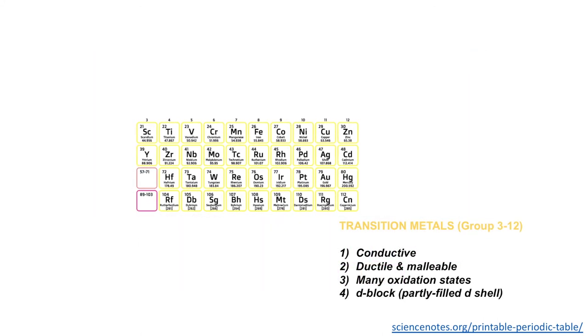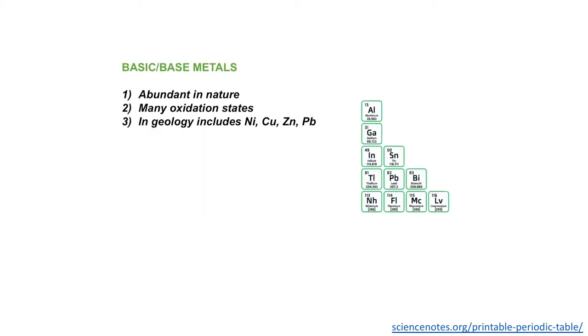Here are the transition metals or d-block elements, which represent groups three to twelve. These are conductive, ductile, malleable elements and they often possess many different oxidation states. Then we have what's known as basic and base metals. These are metals that are abundant in nature and possess many oxidation states or many ions. In geological terminology, base metals includes things such as nickel, copper, zinc and lead.